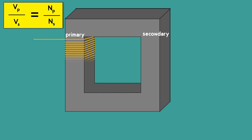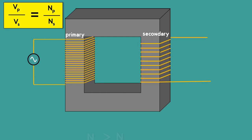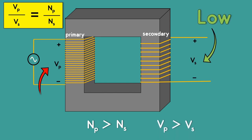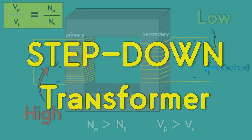Similarly, if the primary winding has a greater number of turns than the secondary, then the secondary side voltage will be lower than the primary side voltage. Since this kind of transformer reduces the output voltage, it is called a step-down transformer.